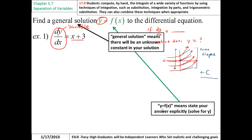Y equals f of x means state your answer explicitly, solve for y. So we don't want any like x squared plus y squared equals 25 stuff going on, you need to have y equals something that only has x's in it. f of x means something that only has x's in it.